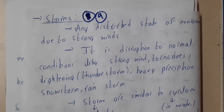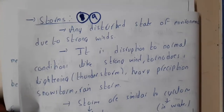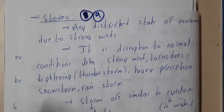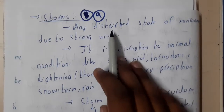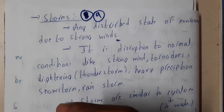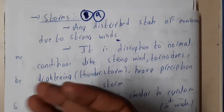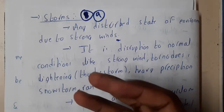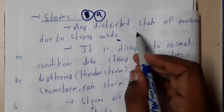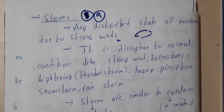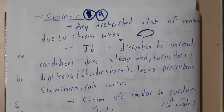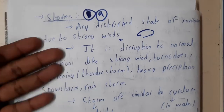In this lecture, let us go through storms. Storms are nothing but things which cause cyclones — any disturbed state of environment due to strong winds. Basically, when the weight of the air is lighter than its normal weight, there is a high chance of blowing winds in the atmosphere. In those situations, if they are rotating or if there is a particular pattern, there is a high chance of causing a storm.